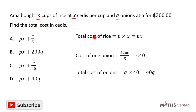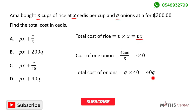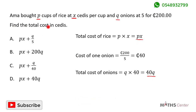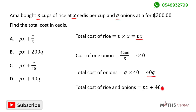We now have the total cost of rice, which is PX, and the total cost of onions, which is 40 kale. To get her total cost in CDs, we add PX and 40 kale together. So the total cost of both the rice and onions is PX plus 40 kale. Looking through the options, the correct option is D.